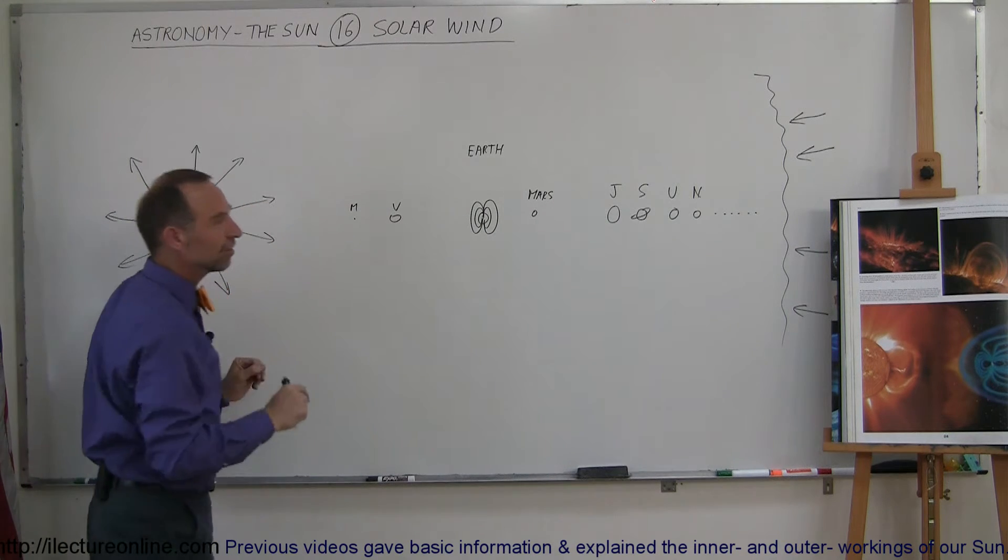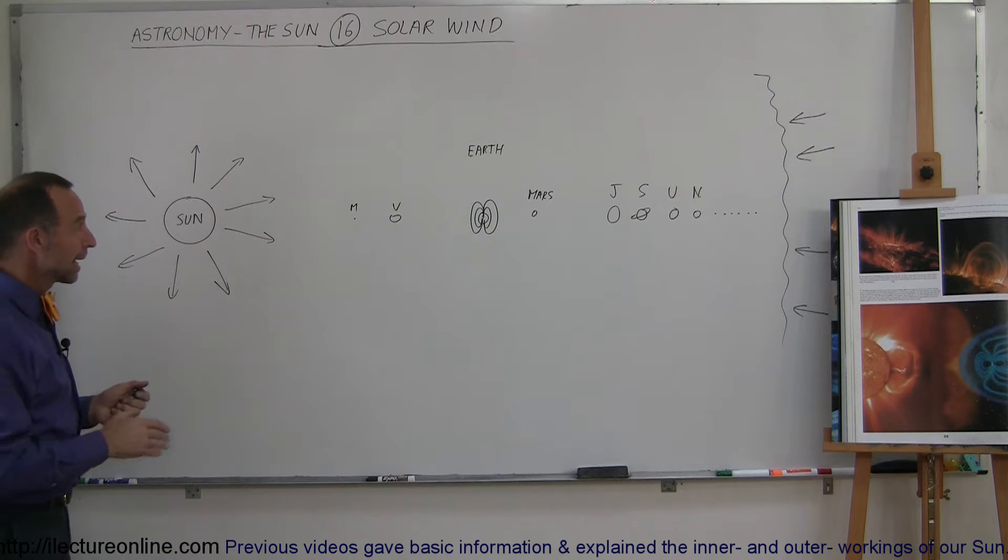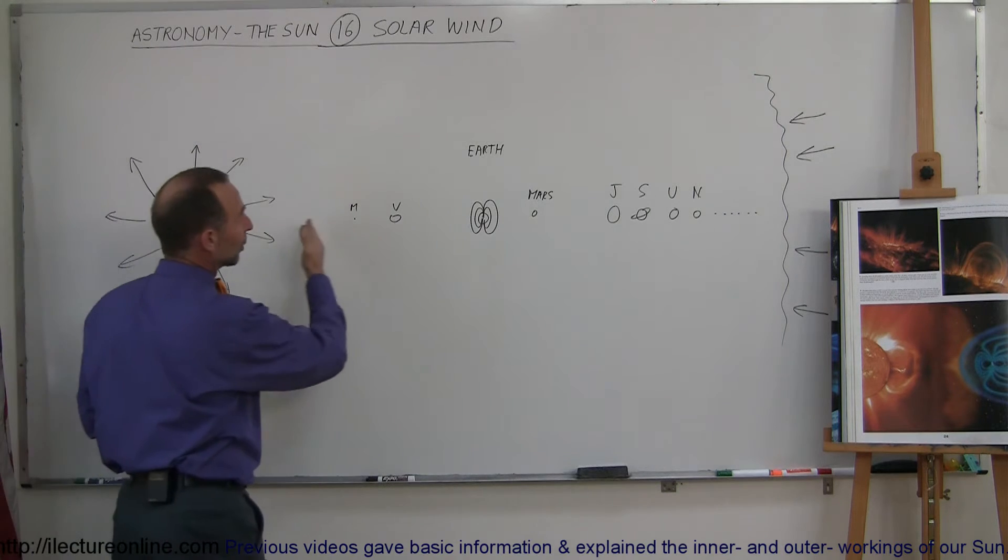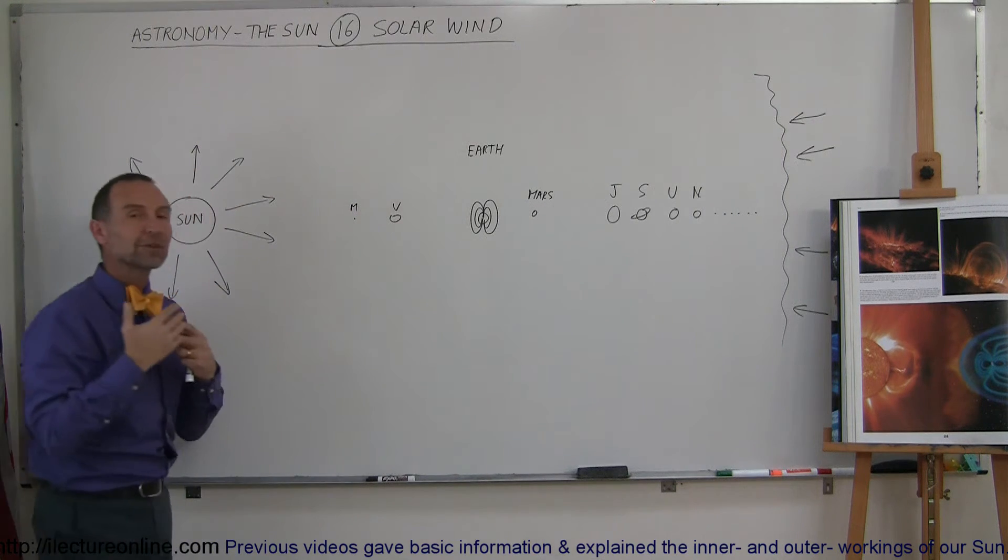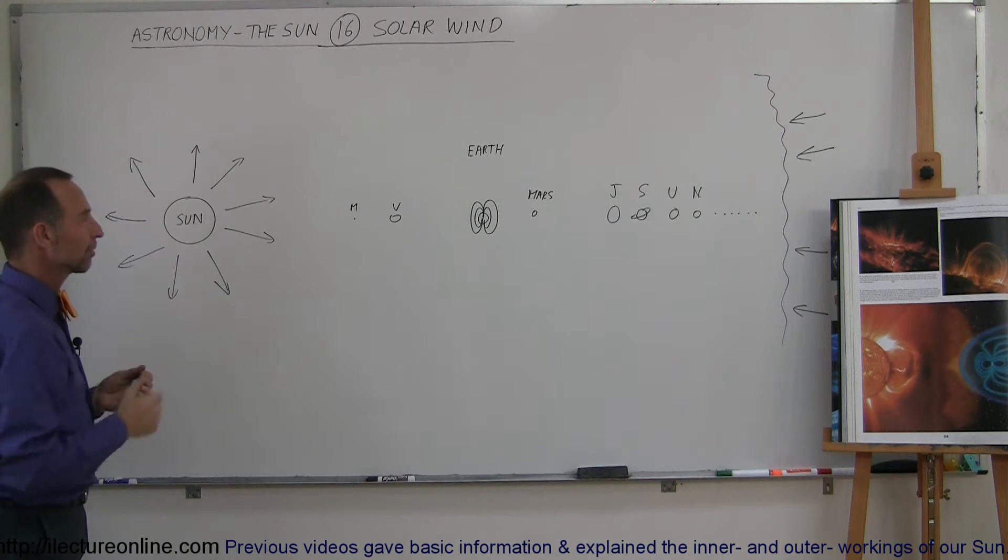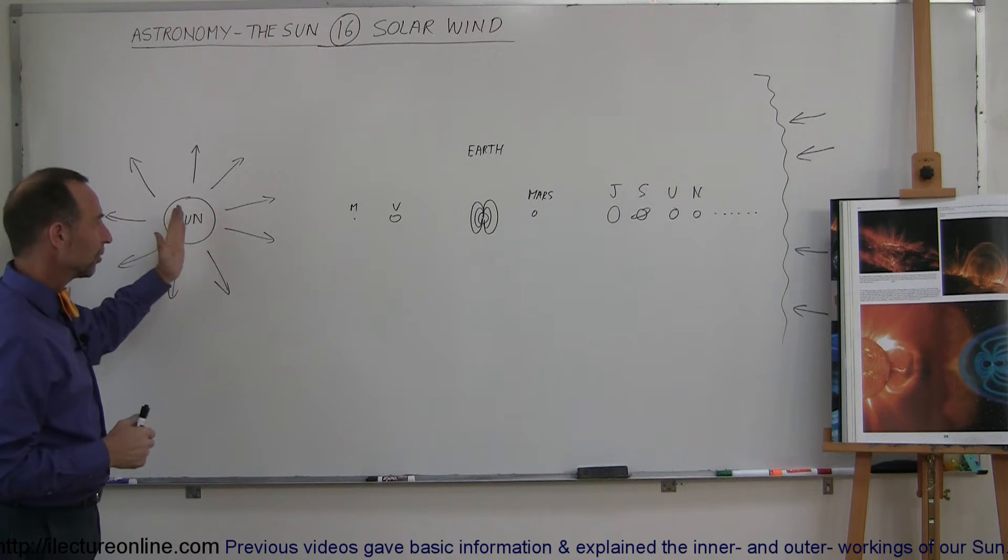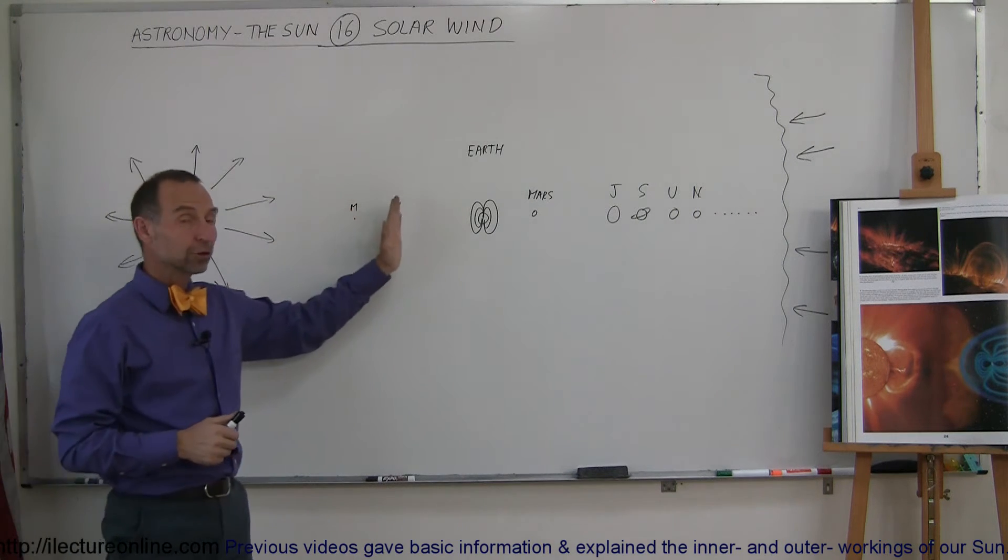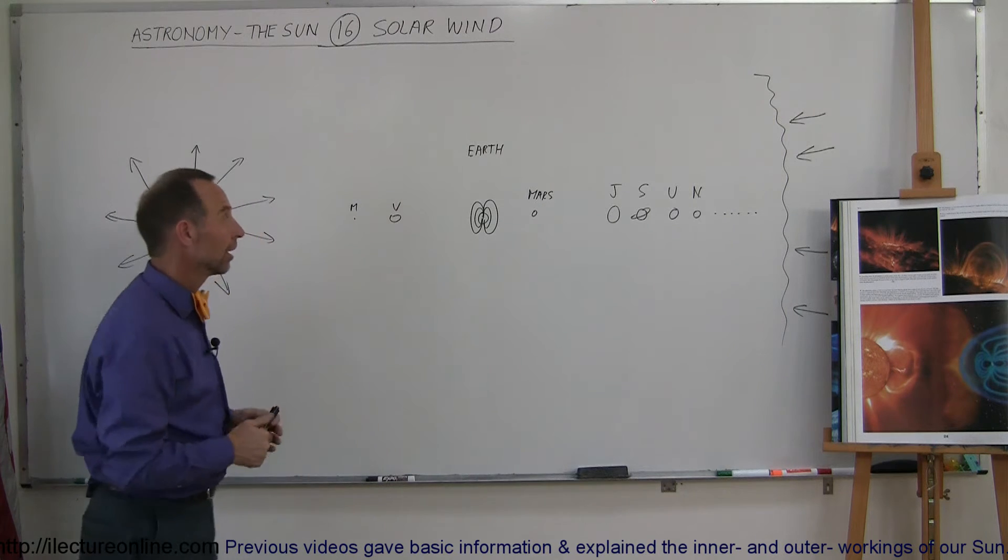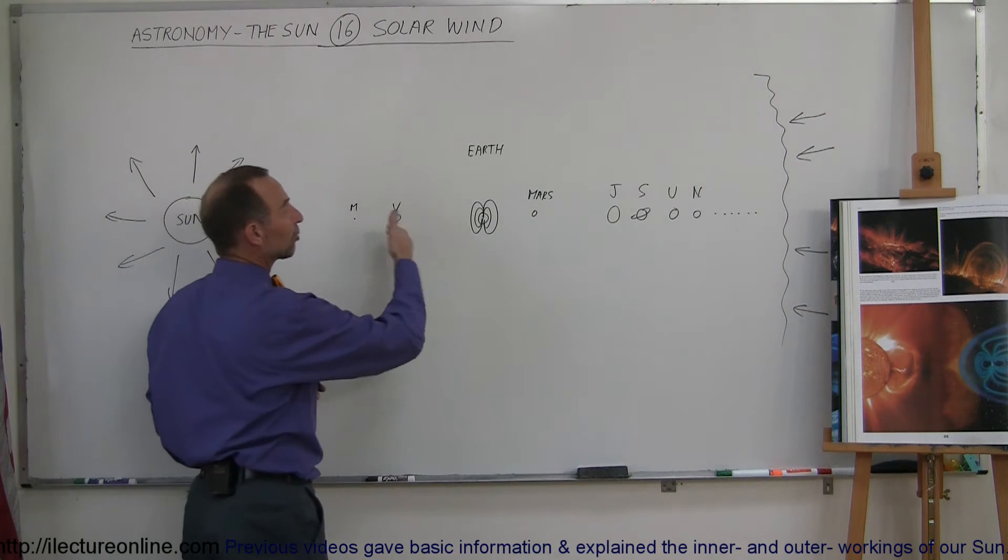at high velocities of several thousand meters per second and they reach the earth in anywhere upwards of about a week depending upon the speed of the particles when they were ejected from the Sun. And those particles, as they come in at very high velocities, could cause a lot of damage unless the planets are protected.